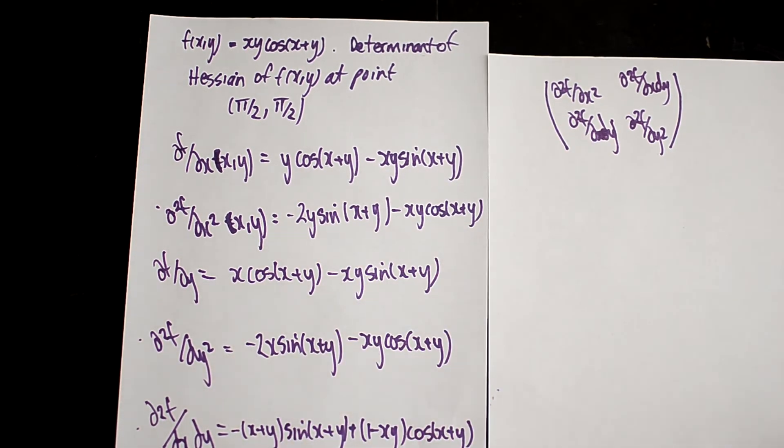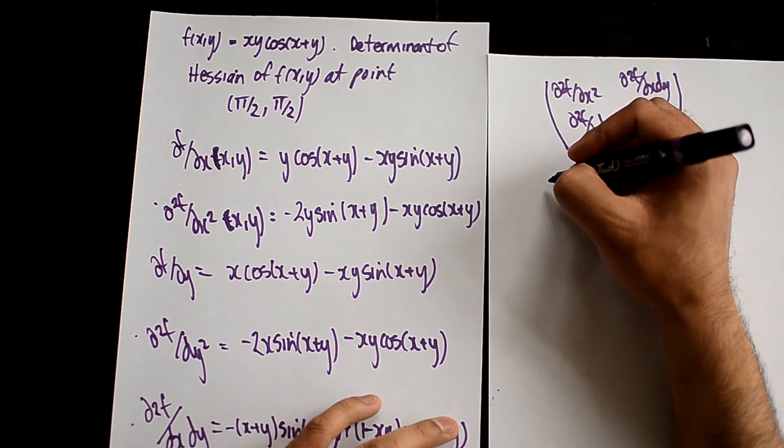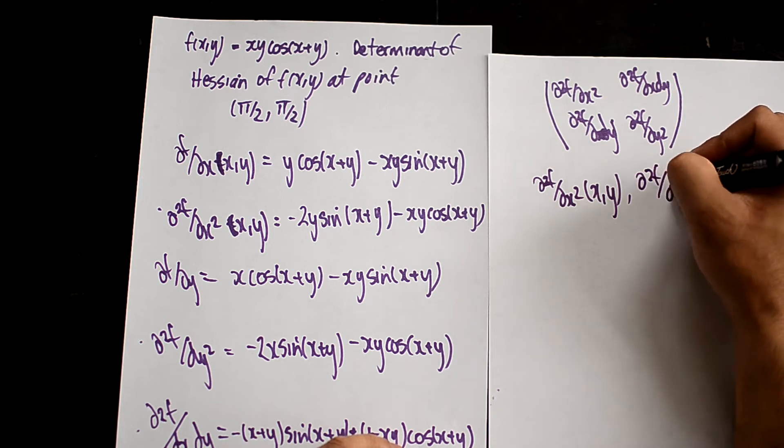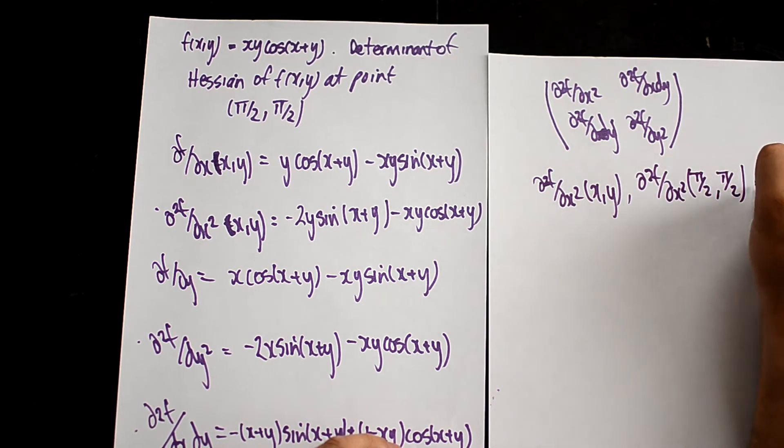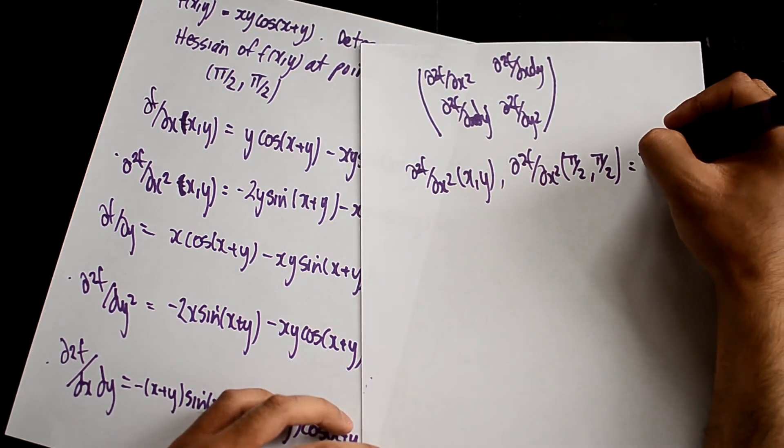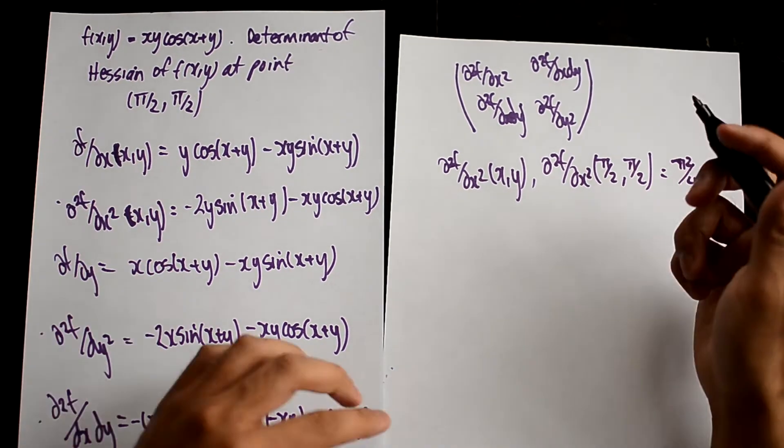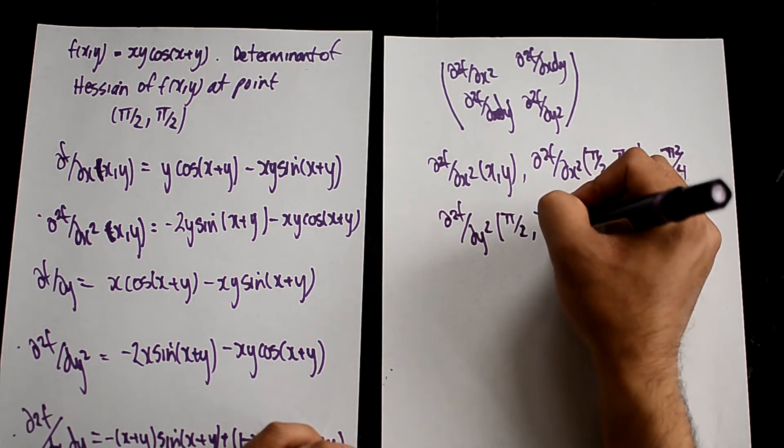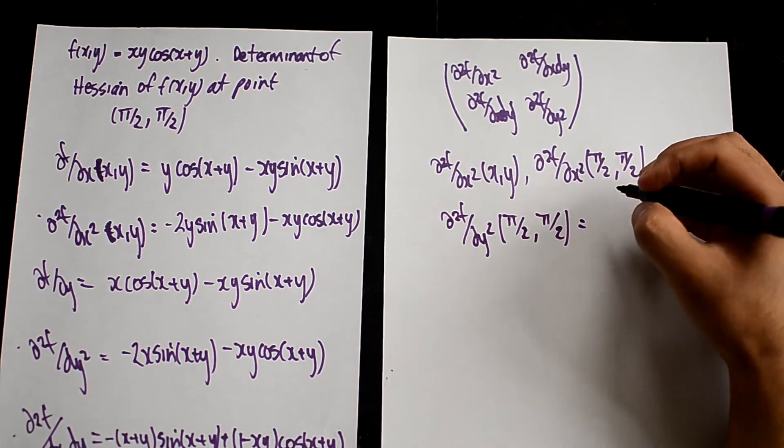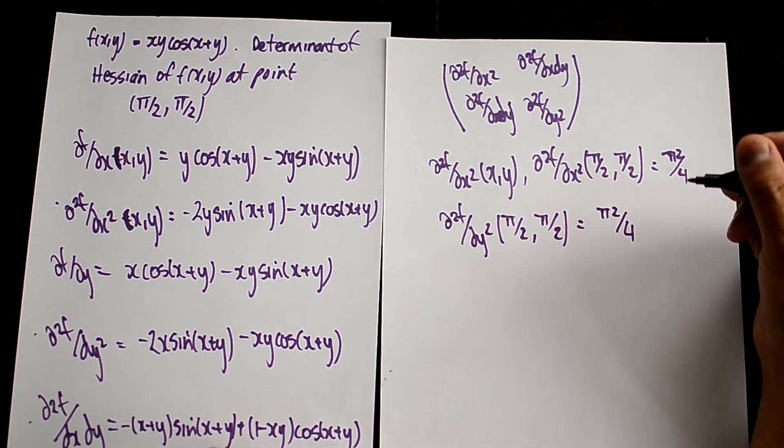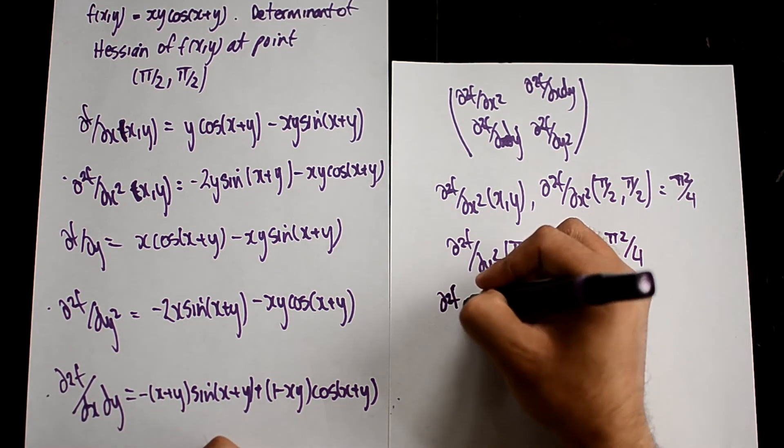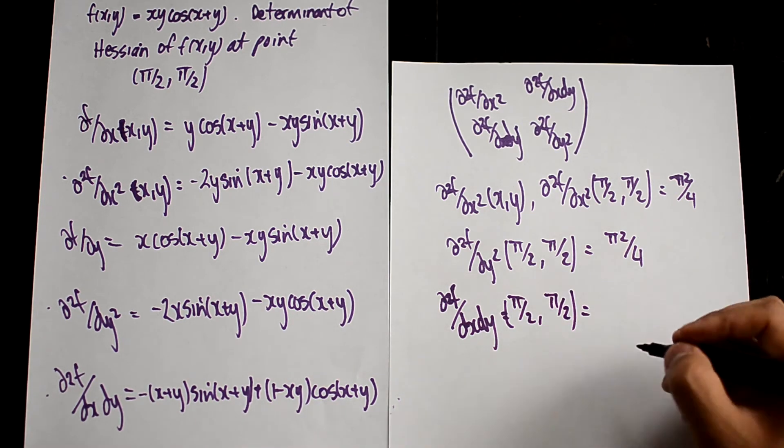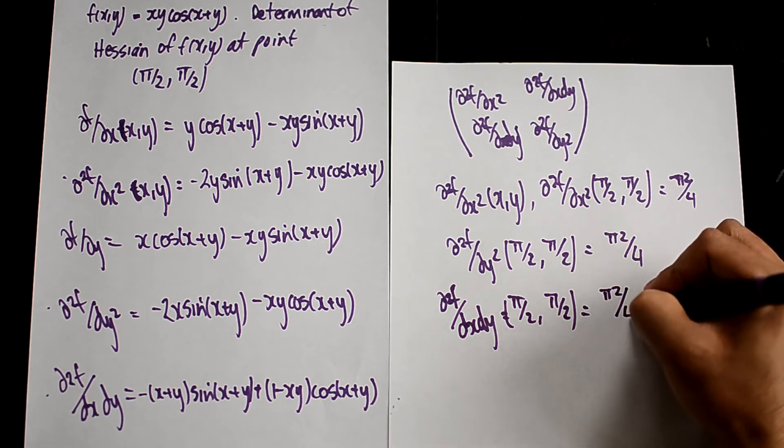So you're plugging in that π/2 into there, there, there, there, there, there, and there. Here, here, here, here, here, and so on. So that you now should get a bunch of values. So if I have d²f/dx²(x,y) and I do d²f/dx²(π/2, π/2), you should get π²/4. If you plug in your π/2 into this, if I do d²f/dy²(π/2, π/2), you should get π²/4. Now again, you plug in d²f/dxdy(π/2, π/2), and you plug it into here. You should get π²/4 - 1.